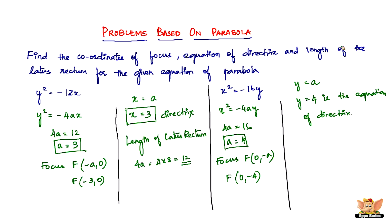The next thing we have to find is the length of the latus rectum. The length of the latus rectum is given by 4a. Since a = 4, the length of the latus rectum is 16 units.